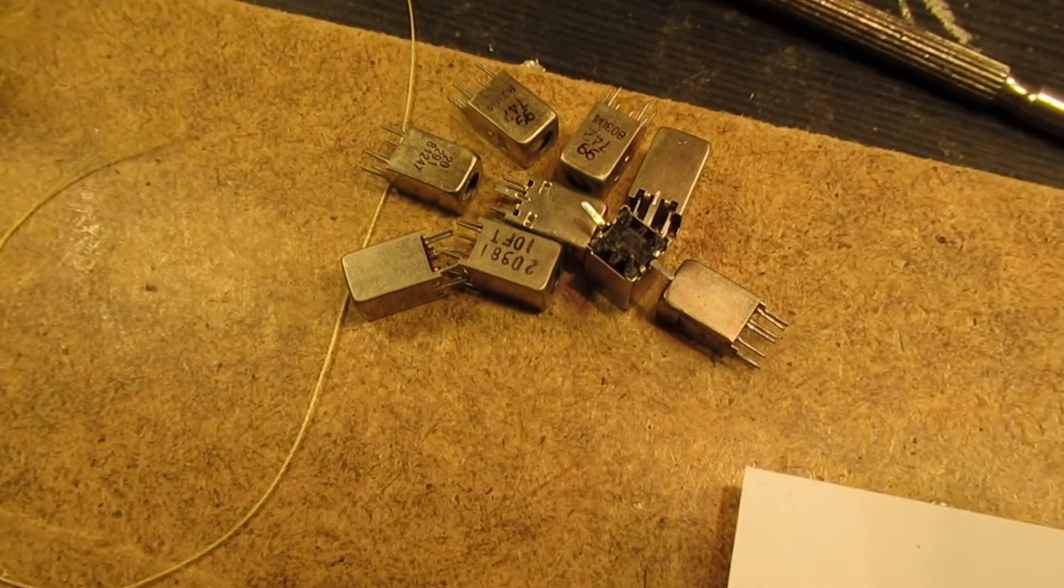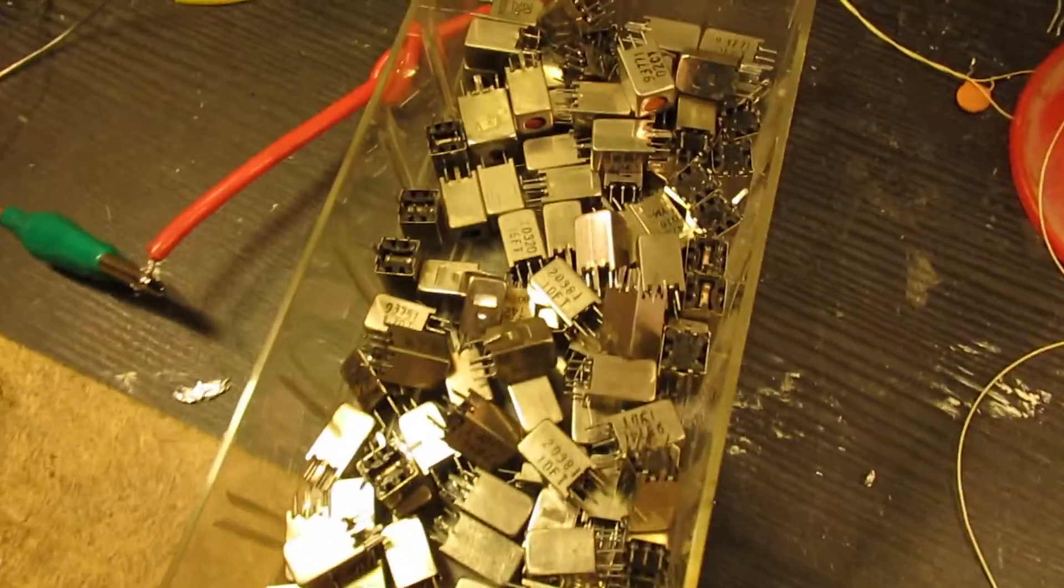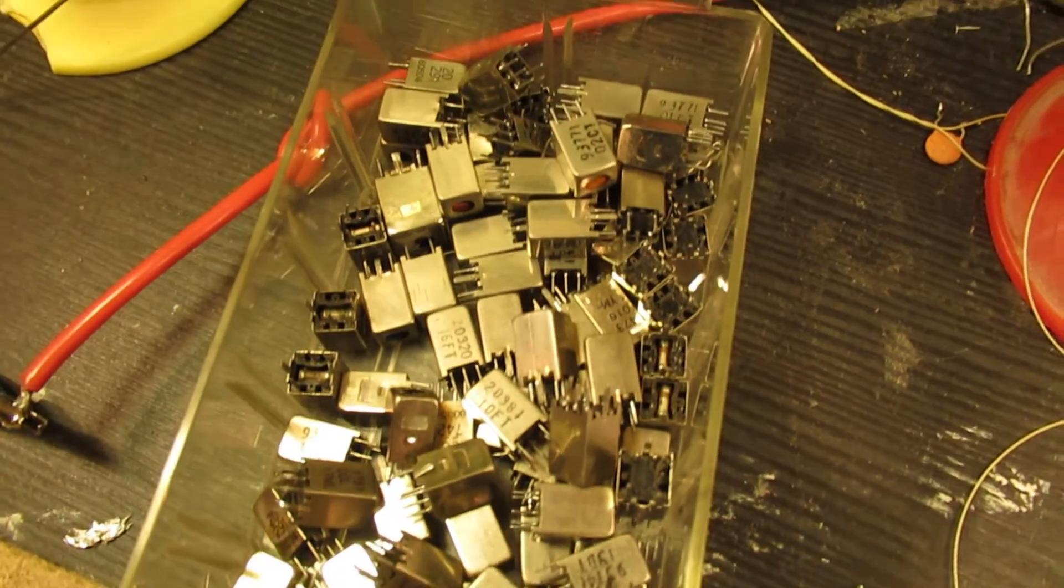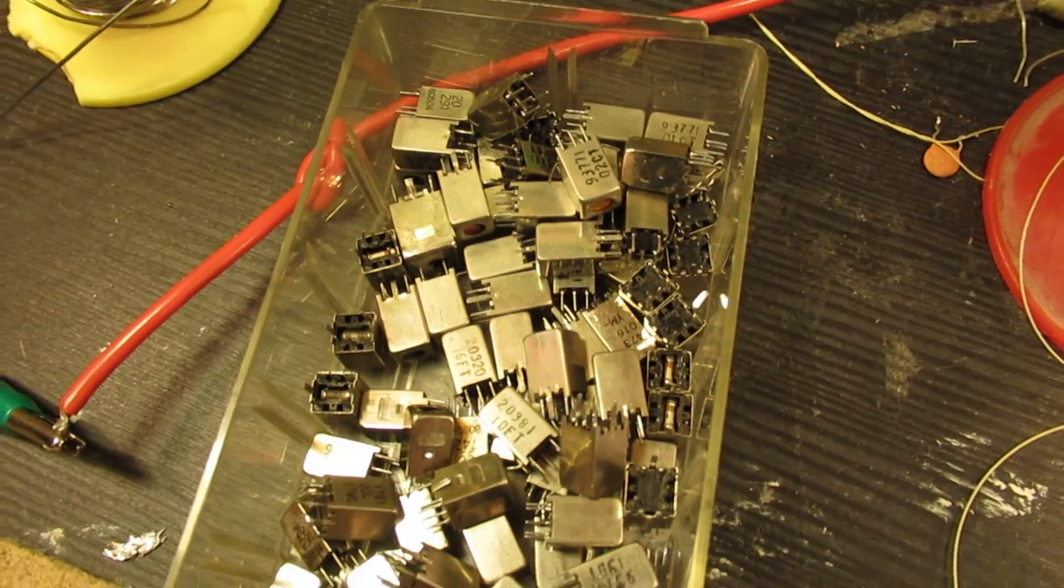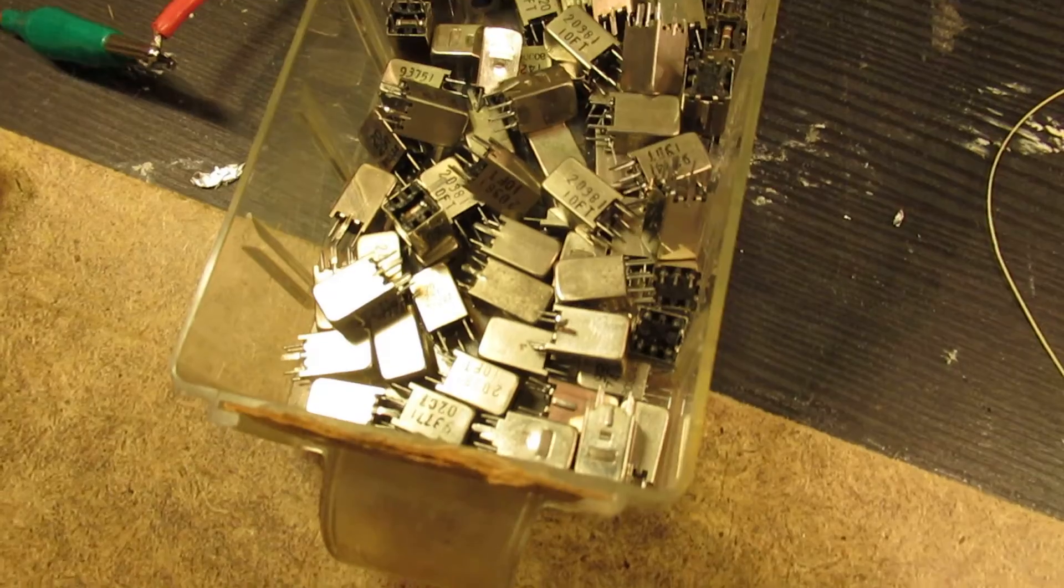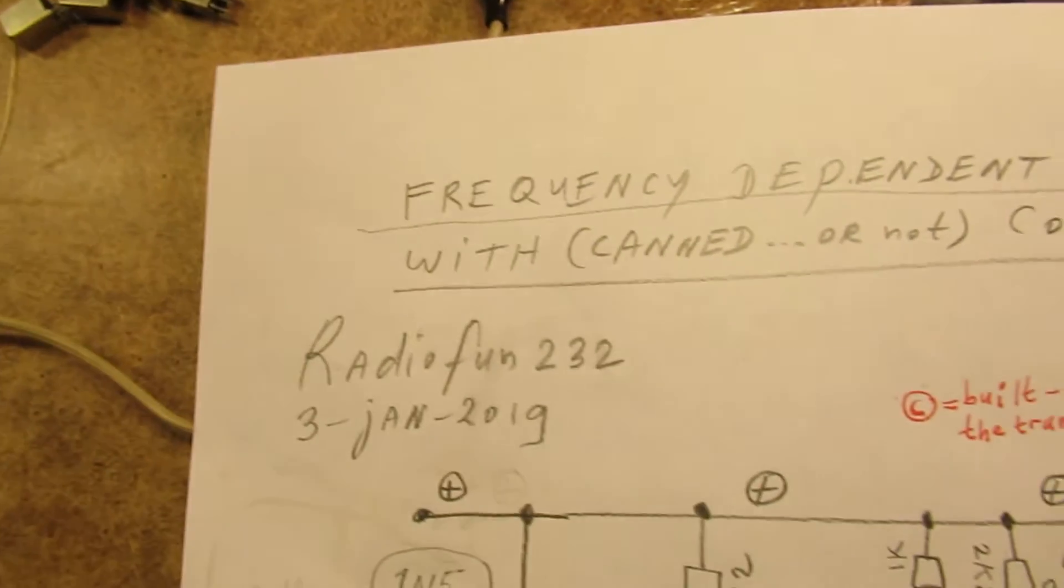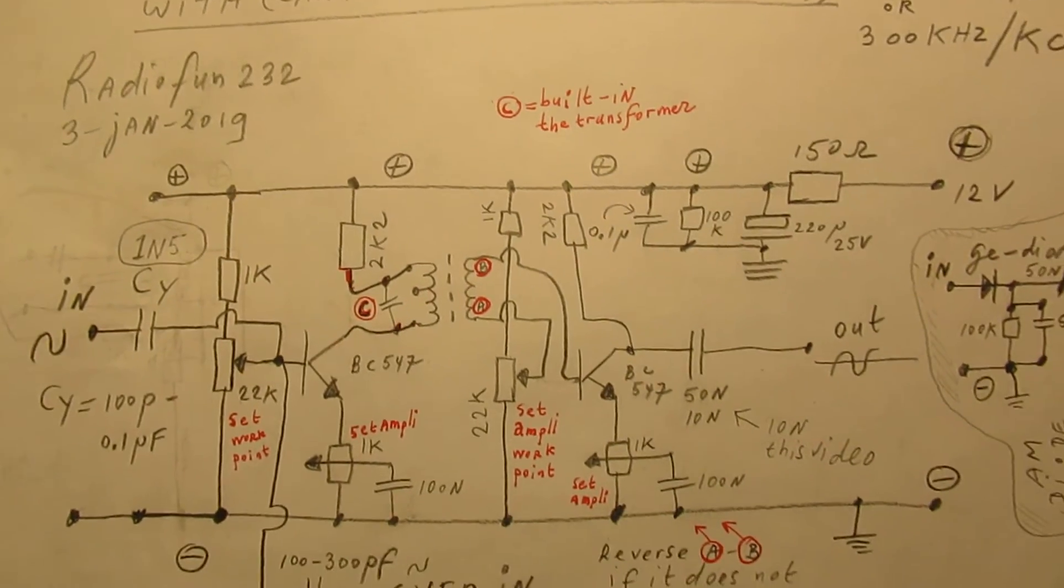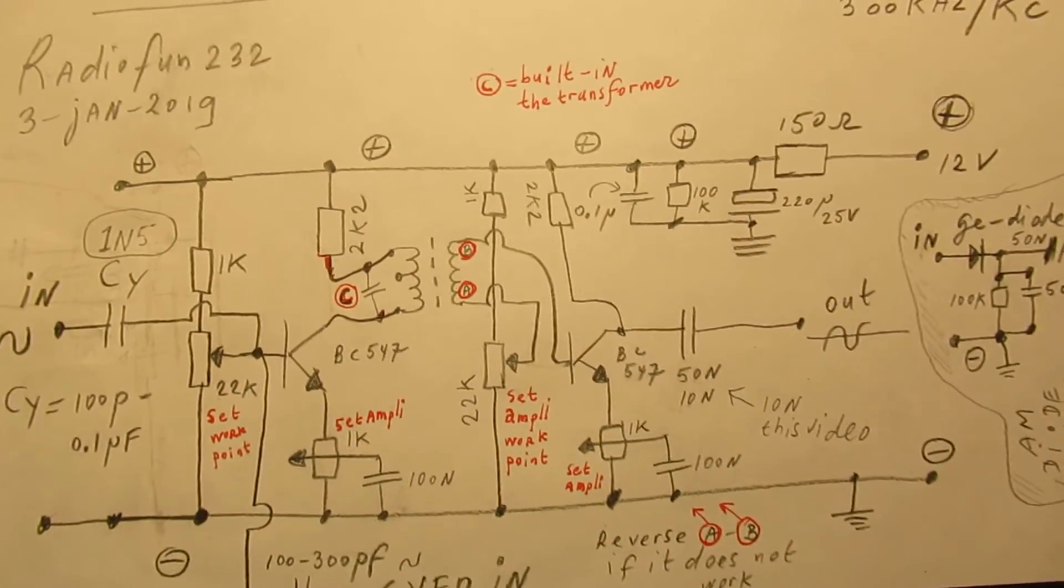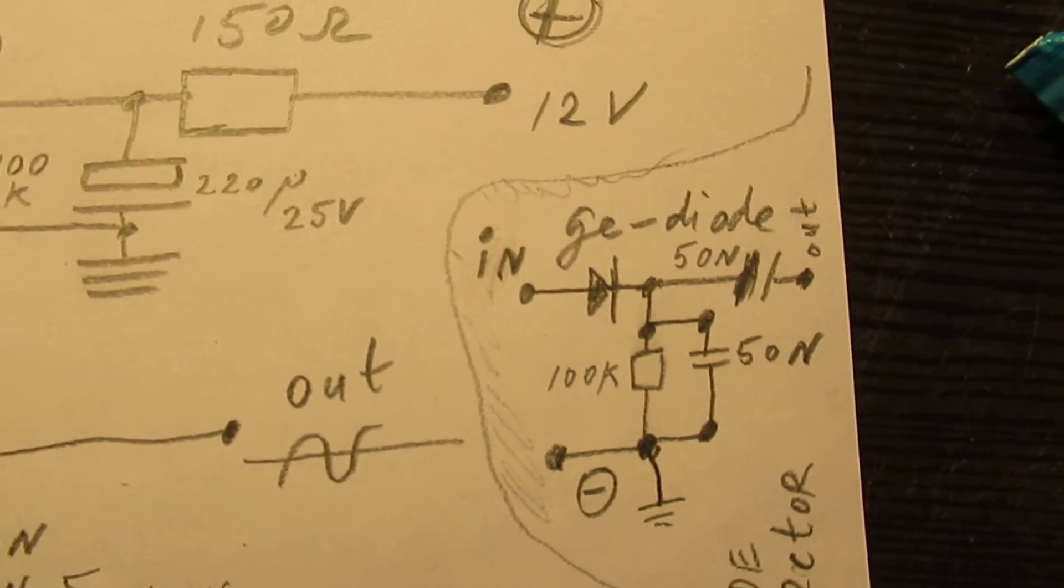You can get all kinds of coils working, I'm absolutely sure. Many of these coils, as long as they work between say 100 kilohertz and one megahertz, can be used to make such a frequency dependent amplifier. When you want to use it as an IF amplifier, this is the way to make an AM detector.